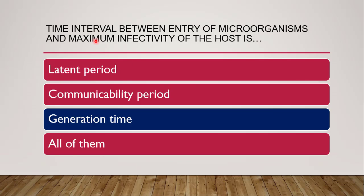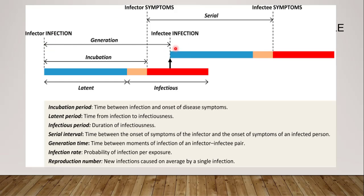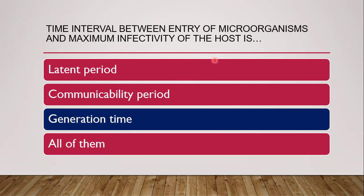So the correct answer for the interval between entry and maximum infectivity is generation time. The key difference: incubation period involves only one person — the infector — from entry to symptoms. Generation time involves two people: from entry into the infector to entry into the infectee. So the interval between entry of the microorganism and maximum infectivity is generation time.